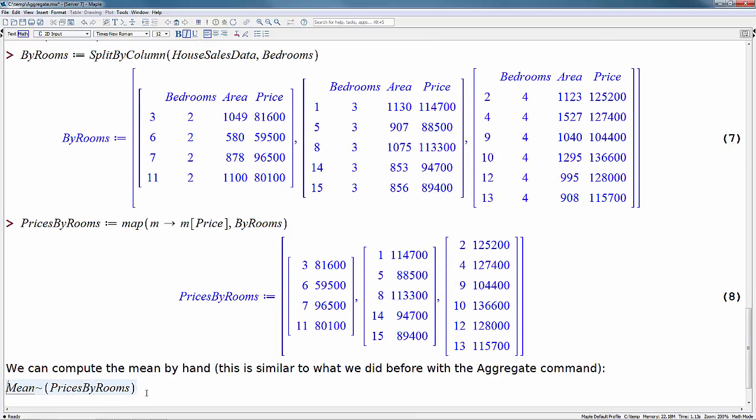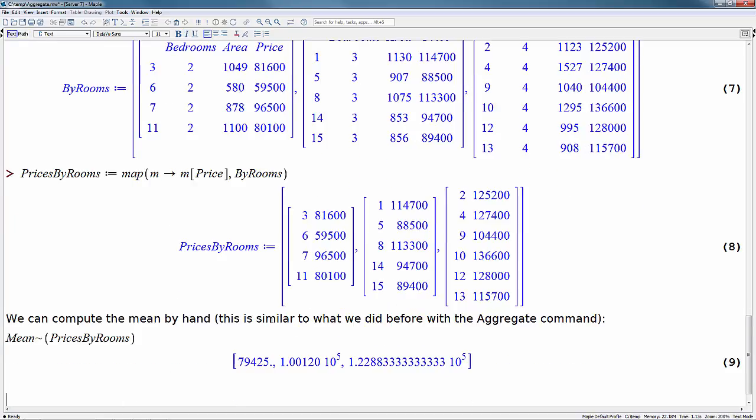And if you wanted to go back and actually compute something like mean by hand, you could map something like mean into this prices by rooms list and see that our means would match up to what we saw before with the aggregate command.